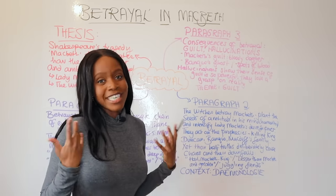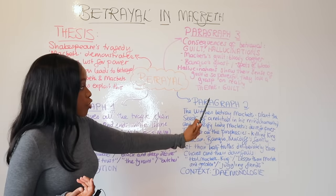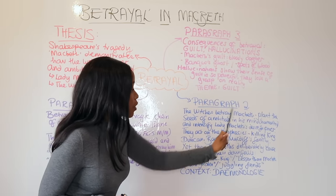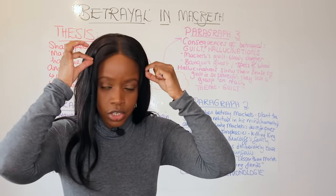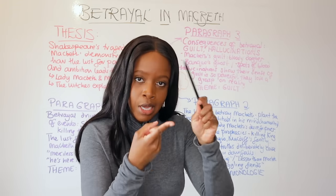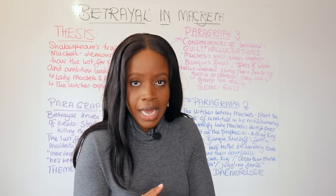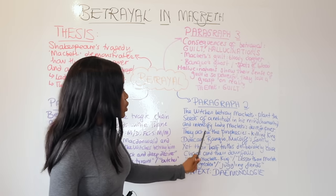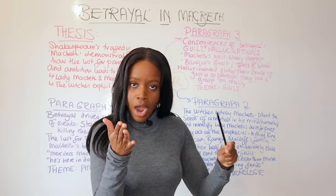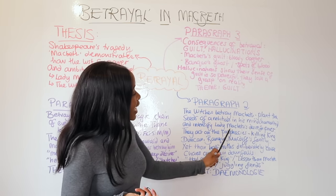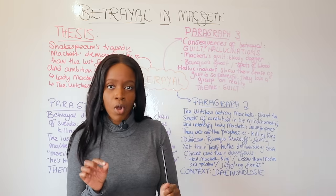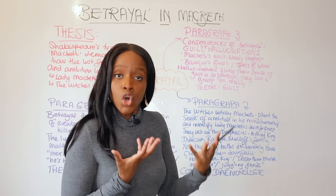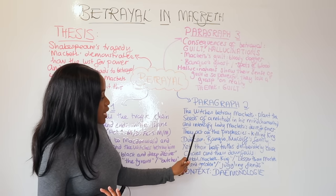Your second grade-nine paragraph should focus on the role of the witches. The witches are very important because they betray Macbeth — they deliberately plant the seeds of ambition in his mind. They appear before him and Banquo, telling him he will be Thane of Cawdor and eventually king. This plants the desire for power in Macbeth's mind, and once he writes to Lady Macbeth about the prophecies, they indirectly intensify her desire for power too, sparking Macbeth's hamartia — his ambition.